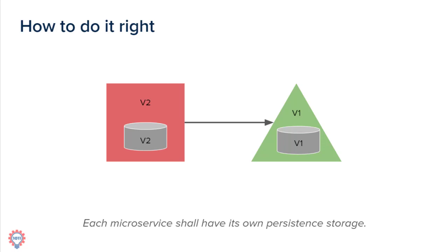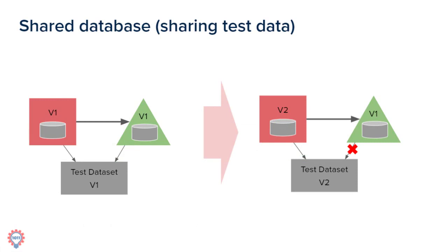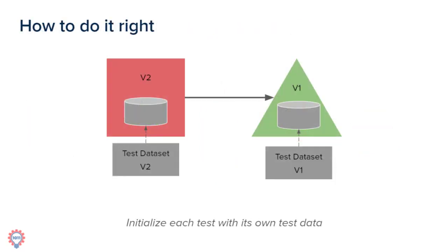That one is pretty easy to understand, and most everyone agrees. The next one is not so obvious: shared test data. Many teams like to have a shared test data set or test database. But if you change one microservice's data structure and apply the same dataset for a different microservice that doesn't know about the change, the test will fail. That change propagates through microservice boundaries to other microservices, and you'll need to make large updates, retest the whole system, and re-release it.